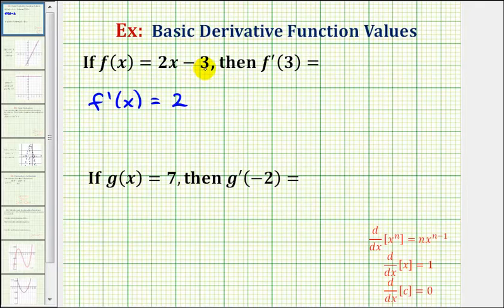Minus the derivative of 3 — the derivative of any constant is always 0 — which means our derivative function is the constant function f prime of x equals 2.